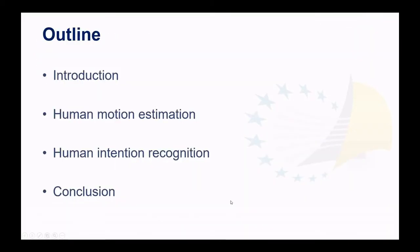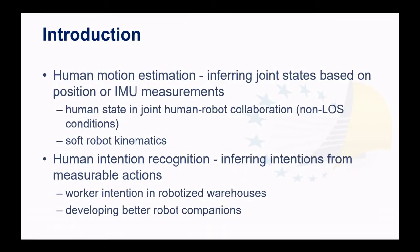The outline is as follows. After a brief introduction, we will introduce the human motion estimation problem and how we approach it, and then we will move on to human intention recognition. The human motion estimation will be about inferring joint states of the human based on position measurements, which are usually done with a motion capture system or IMUs. This can be very practical for human-robot collaboration, but perhaps also as a solution for kinematics equations of soft robots. Then we will talk about human intention recognition, which is about inferring intentions from measurable actions of the human. Our example will be on estimating worker intention in robotized warehouses, which can lead to developing better robot companions.